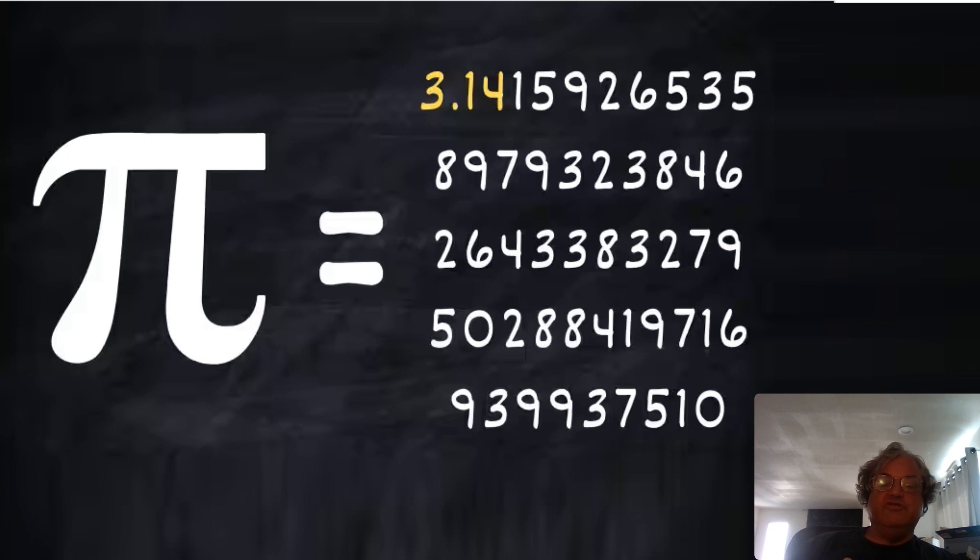Here's the first 50 digits of pi. I actually memorized 100 digits. I'm not going to tell you all of them. That's in another video. But you don't really need to know this many. Most people only know the first two, 3.14.